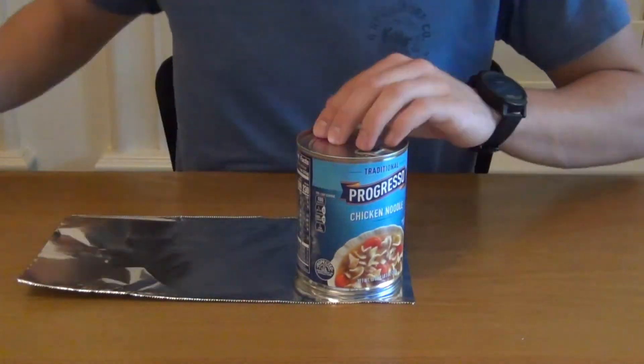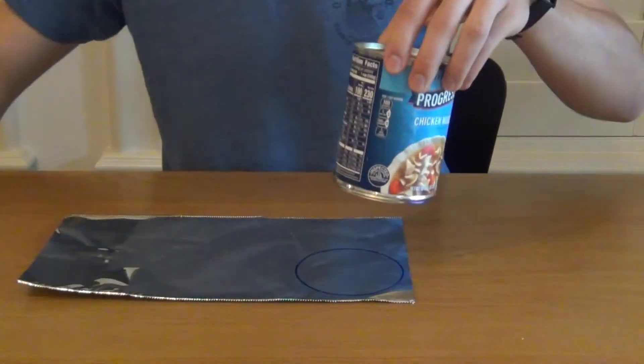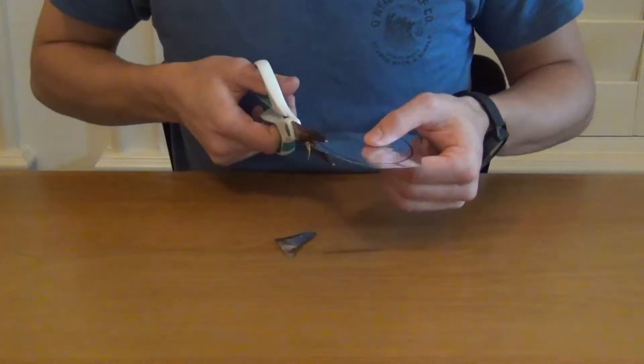Grab your foil and the thing you're going to use to make a circle, use the sharpie to trace a perfect circle onto the foil, and then use the scissors to cut along the lines.